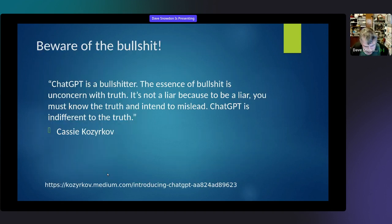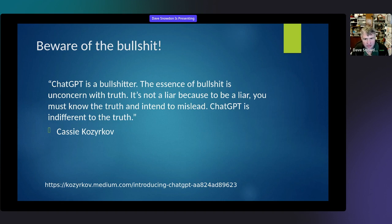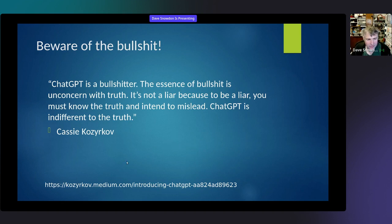I'd like to start with a quote from machine learning expert Cassie Kozyrkov — I apologize for murdering her name. She's an expert at Google and writes extensively on machine learning. This is what she said about ChatGPT: 'ChatGPT is a bullshitter. The essence of bullshit is being unconcerned with truth. It's not a liar, because to be a liar you must know the truth and intend to mislead. ChatGPT is indifferent to the truth.' ChatGPT will bullshit you with confidence — it'll tell you things that are absolutely not true but won't admit to any uncertainty. It's totally buyer beware. It's on you to verify what it's telling you.